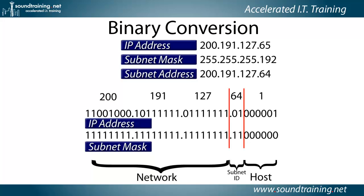What's not so clear to the eye is where the dividing line is between network and host. In this case it's between bits 26 and 27. In order to know where the dividing line is, you have to understand how the subnet mask works.